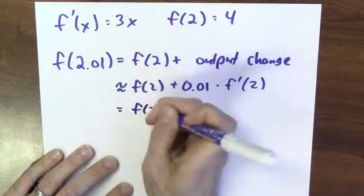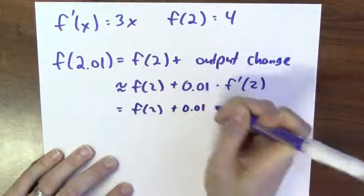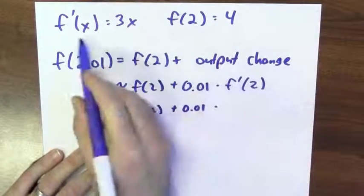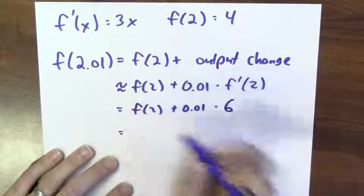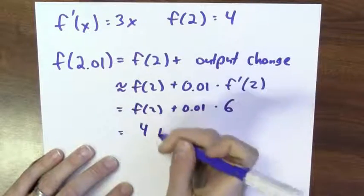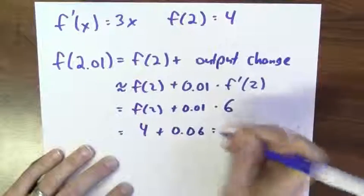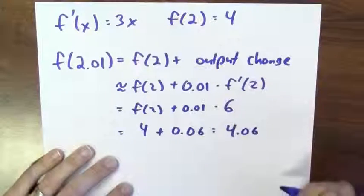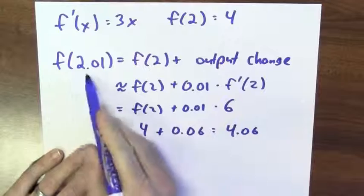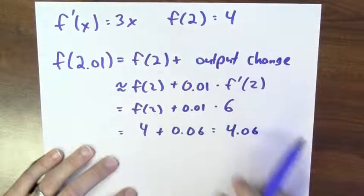Now, in this case, I know what these numbers are. 0.01 times the derivative of f at 2 is 6, which means that this is about 4 plus 0.06, which is 4.06, and that's about what this function at 2.01 is equal to.